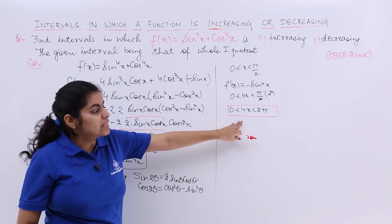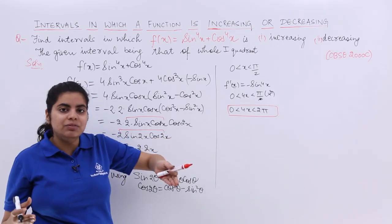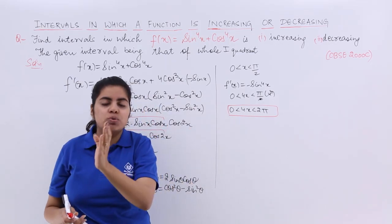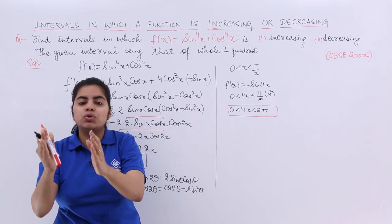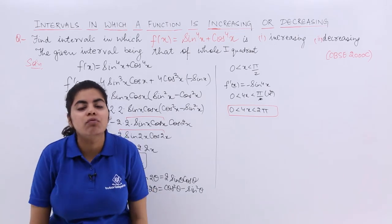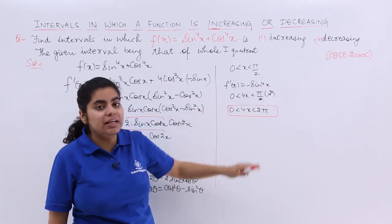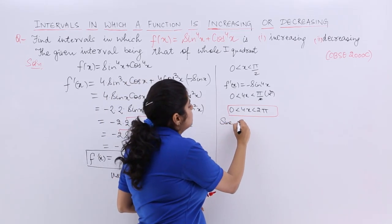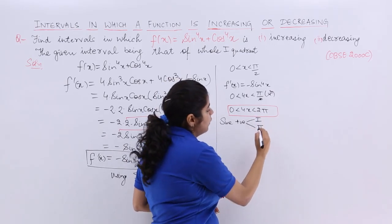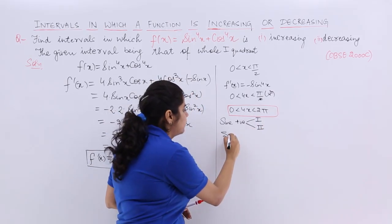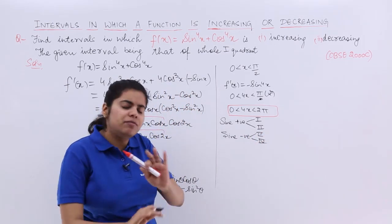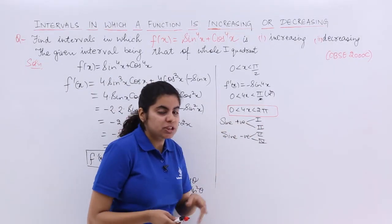If I break this 0 to 2π into intervals, this is the whole Cartesian plane: 0 to π/2 is first quadrant, π/2 to π is second quadrant, π to 3π/2 is third quadrant, 3π/2 to 2π is fourth quadrant. In which quadrants is sin positive? Sin is positive in first and second quadrants. Sin is negative in third and fourth quadrants.